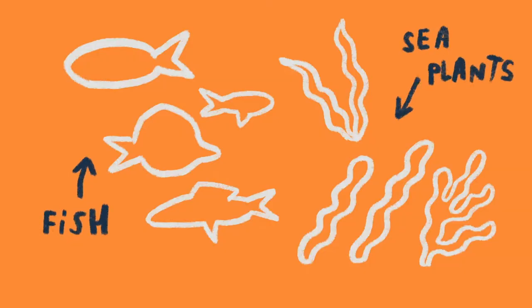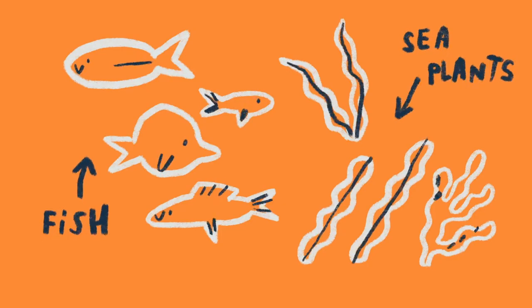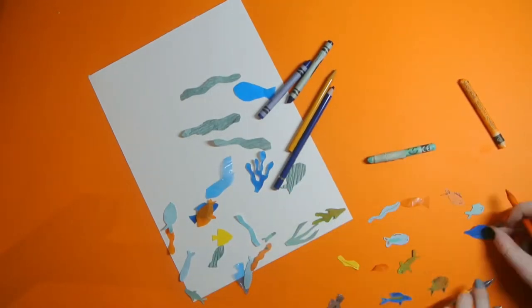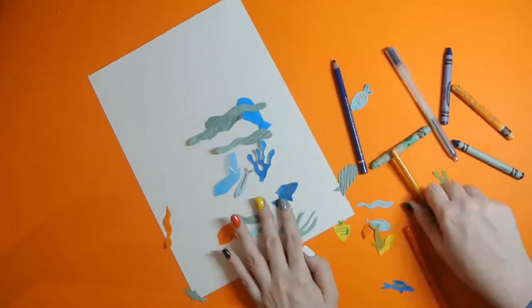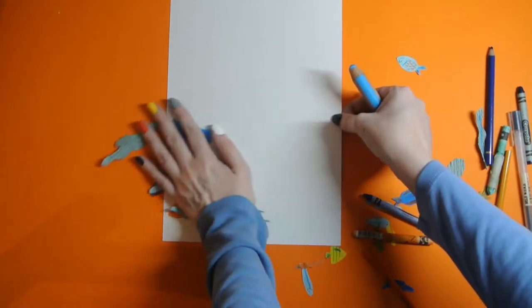From these we want to cut out some fish and some squiggly plant shapes. Be sure to get an adult to help if you need it. And then next we're going to add some details on those too. So little smiley faces or squiggly lines, scales, all that kind of stuff, to make them look a little bit more interesting.